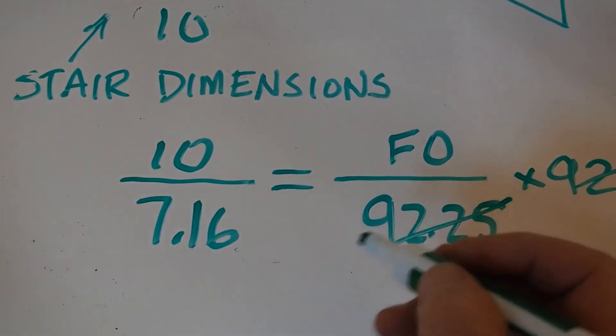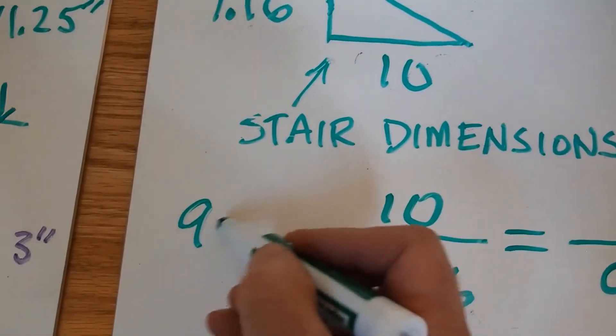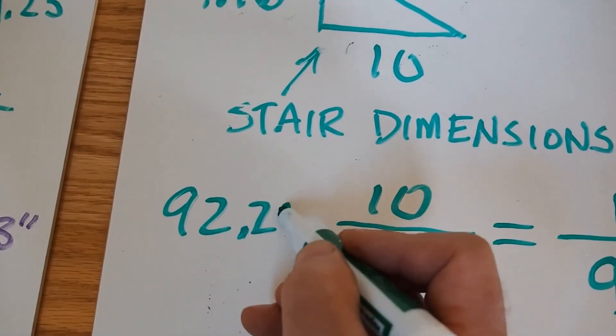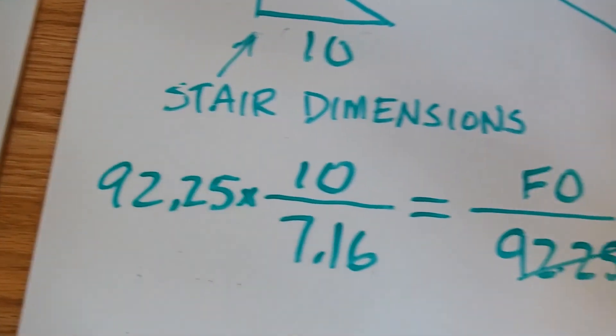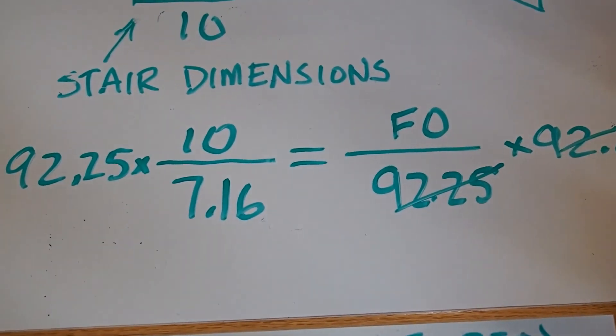Then I'm going to multiply both sides by 92.25. That will cancel out.